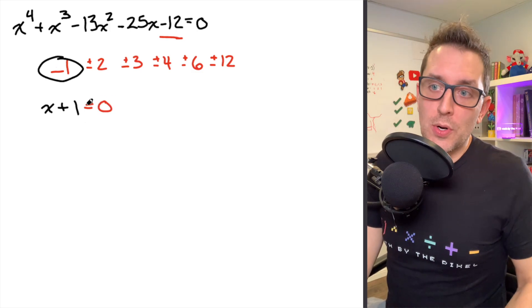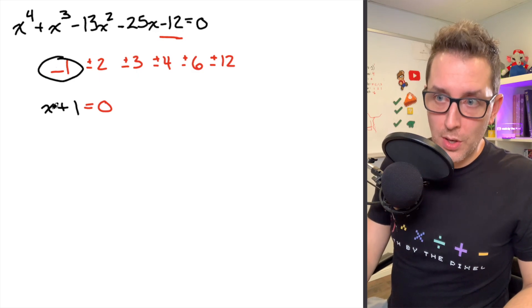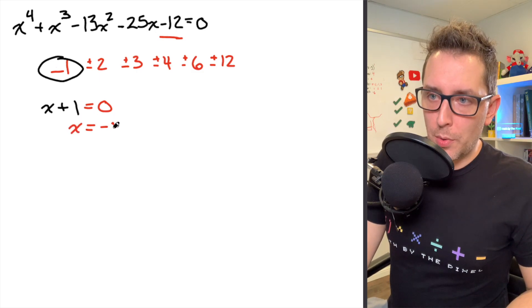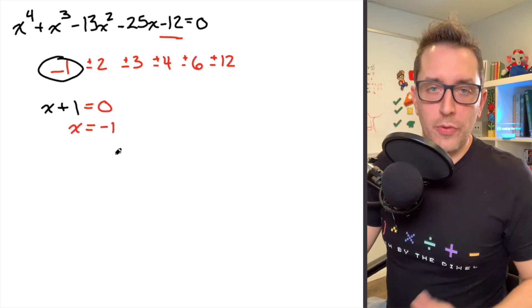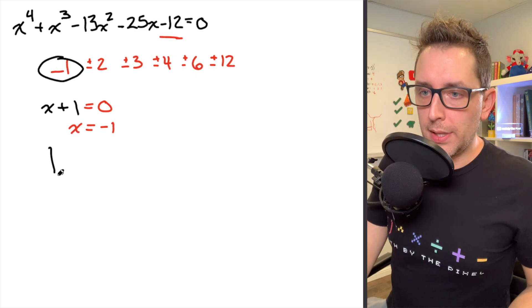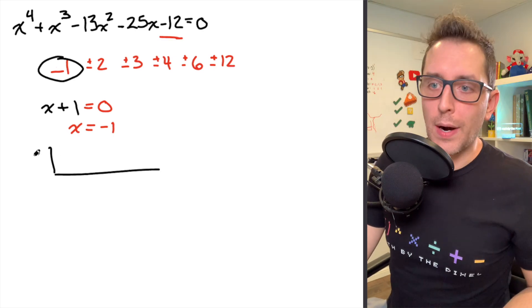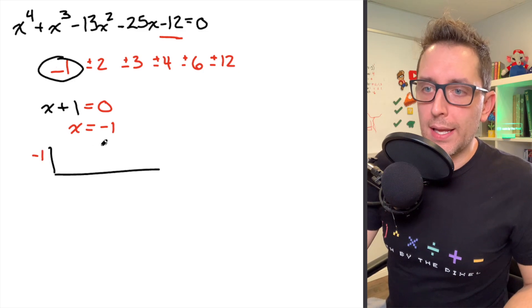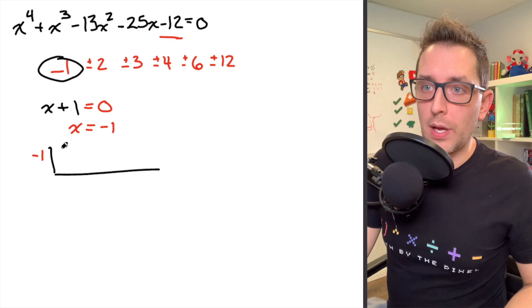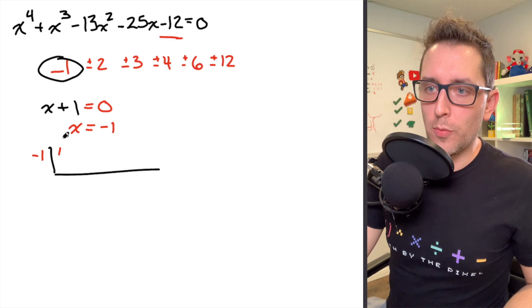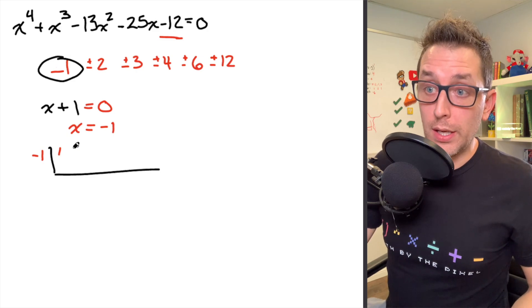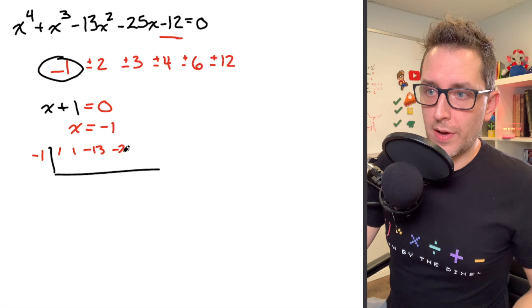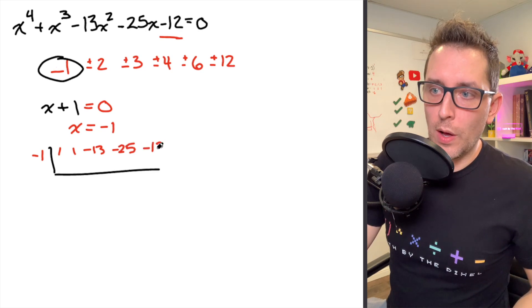If you're not familiar with synthetic division, it's a short process that allows us to divide a polynomial by a binomial. We take that binomial, set it equal to 0, and get the number that makes it equal to 0 — so negative 1. I place that negative 1 on the outside of the synthetic division bracket. In the top row are my coefficients: 1 in front of x to the 4th, 1 in front of x cubed, negative 13 on x squared, negative 25 on x, and negative 12 at the end.